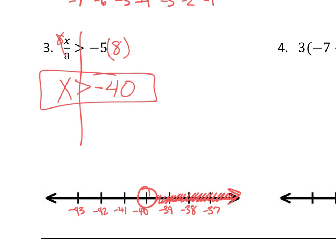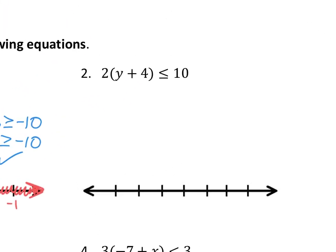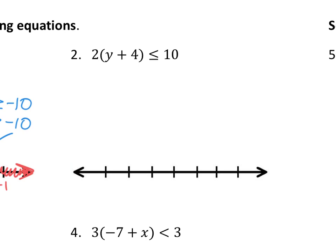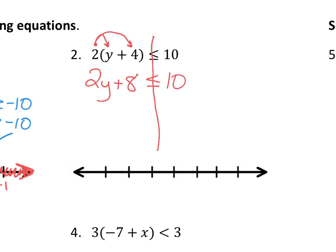Let's try one with more complicated steps, like what we practiced last class. Number 2 has a number in front of parentheses: 2 times (y plus 4), less than or equal to 10. We distribute the 2 — multiply it times everything in the parentheses, which gives us two separate pieces: 2 times y is 2y, and 2 times 4 is positive 8. Don't end up with fewer than two separate pieces.